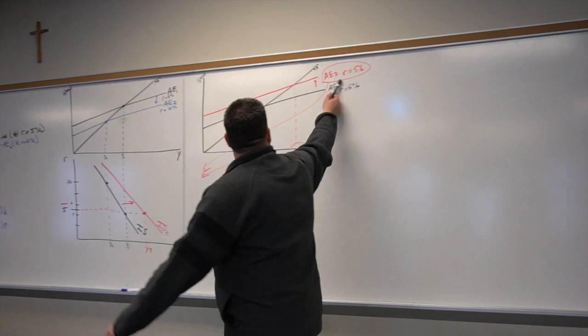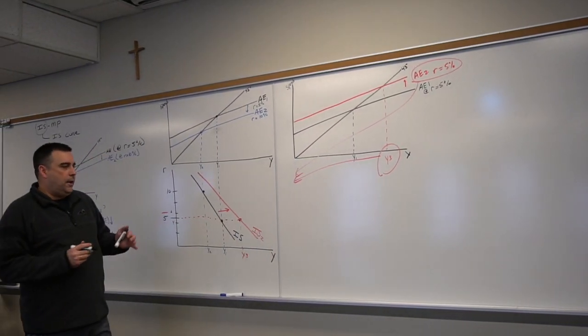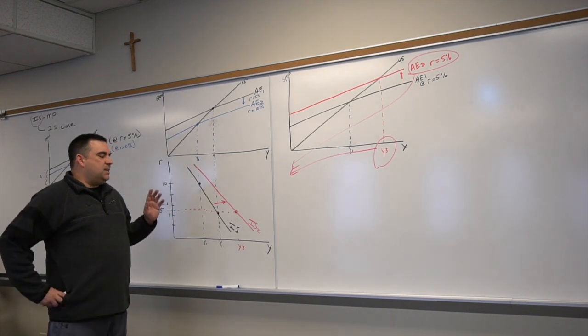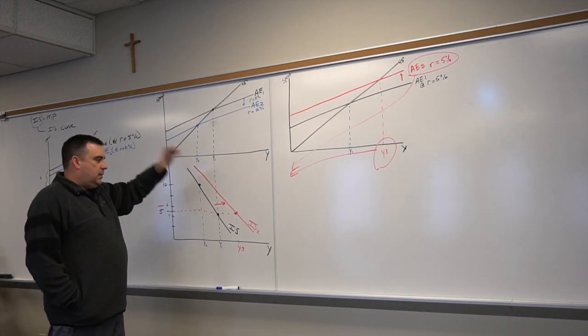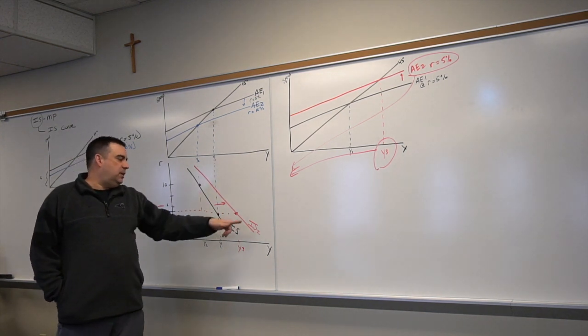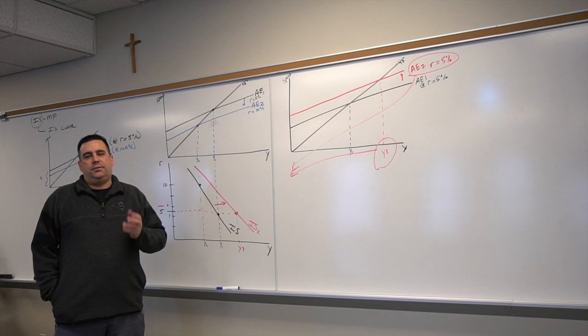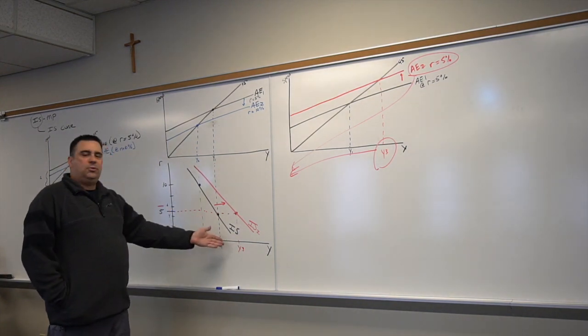Okay, so what we see here now is that an increase in spending shifts our IS curve to the right. While it's not a perfect viewpoint, it's pretty close. Effectively, this IS curve just represents spending in society.